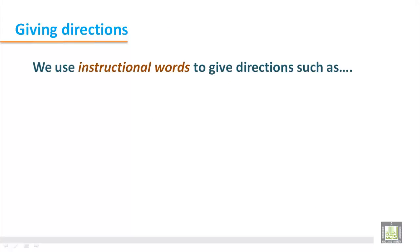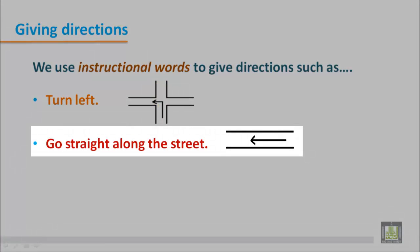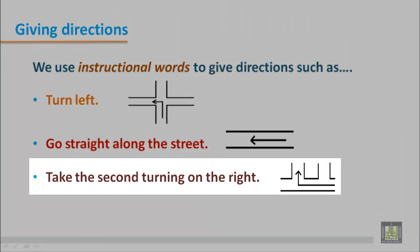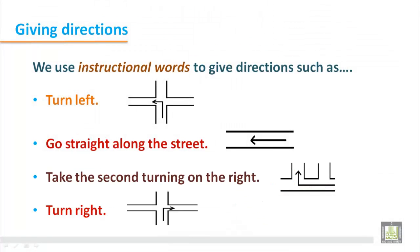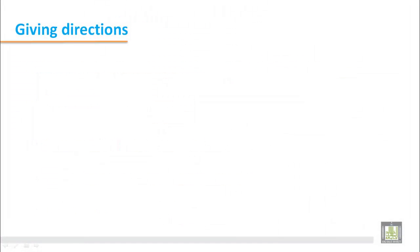We use instructional words to give directions, such as 'turn left.' In this picture we see a junction where you are directed to turn left. 'Go straight along the street' — this picture shows that you should go straight. 'Take the second turning on the right' — you are coming from this way and you have to take the second turning on your right. 'Turn right' — at the junction you are directed to take the right turning.